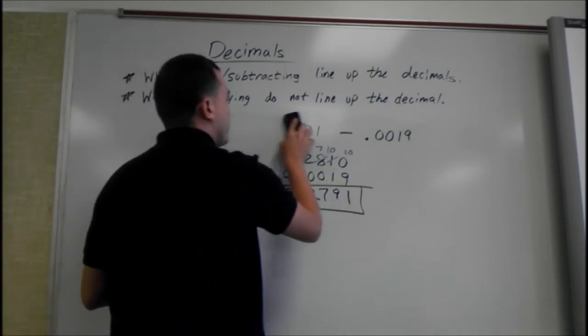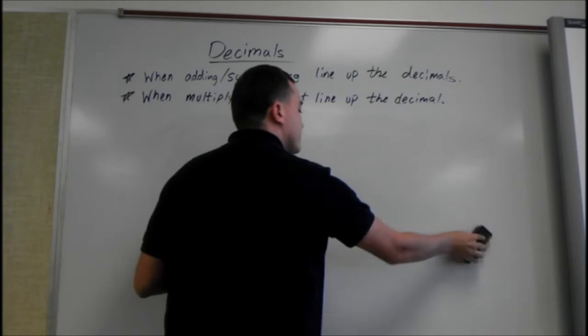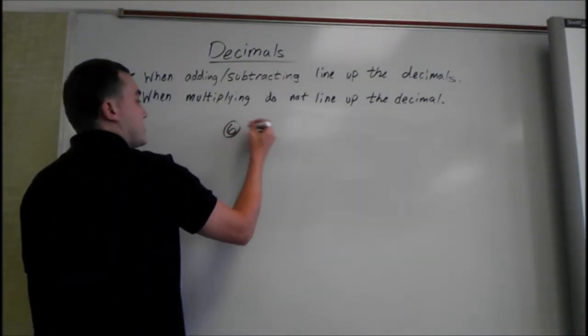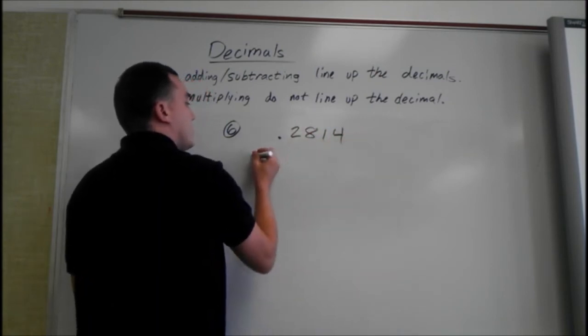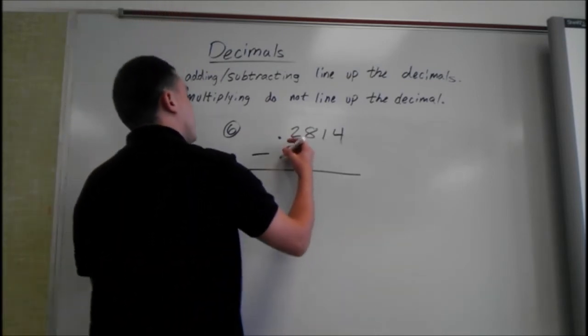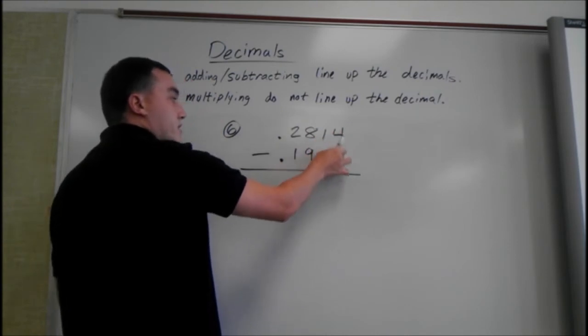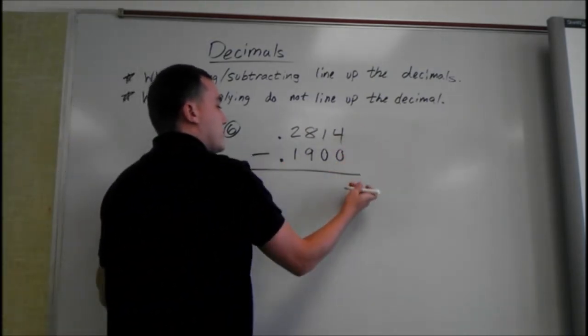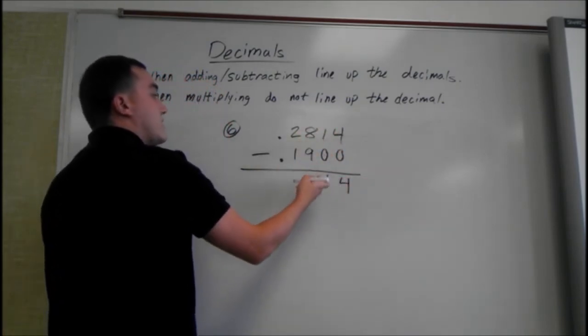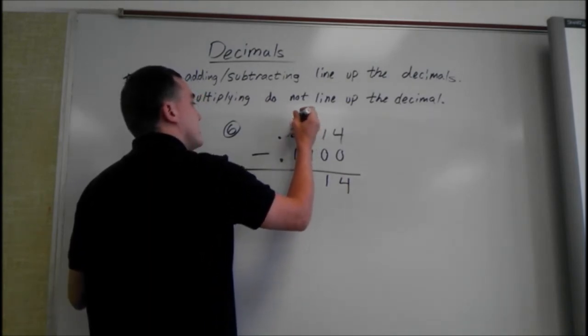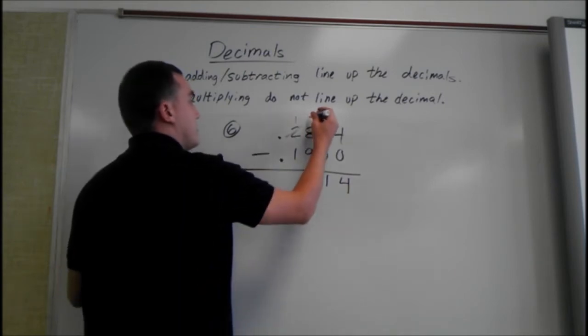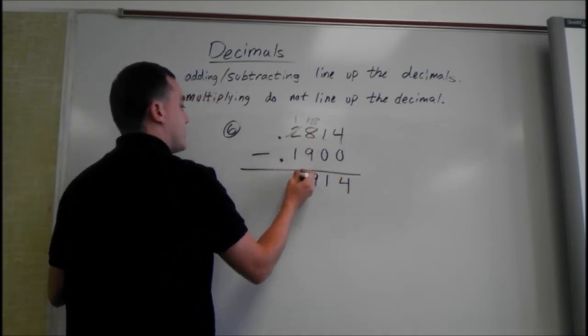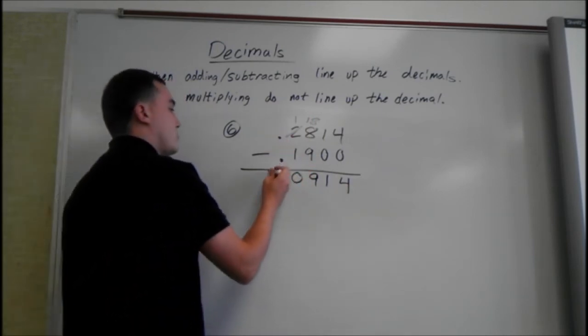Next one. 0.2814 minus 0.19. There's nothing under these, we need placeholders, so we're going to add some 0s. 4 minus 0 is 4, 1 minus 0 is 1. 8 minus 9, since we can't do that, borrow 1 from the 2. This will become 18. So then we have 18 minus 9, which is 9. And 1 minus 1 is 0. Decimal drops down. So 0.0914 would be our answer.